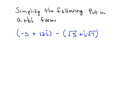Now that you know what a complex number is, which is the number of the form a plus bi, where a and b are both real numbers,